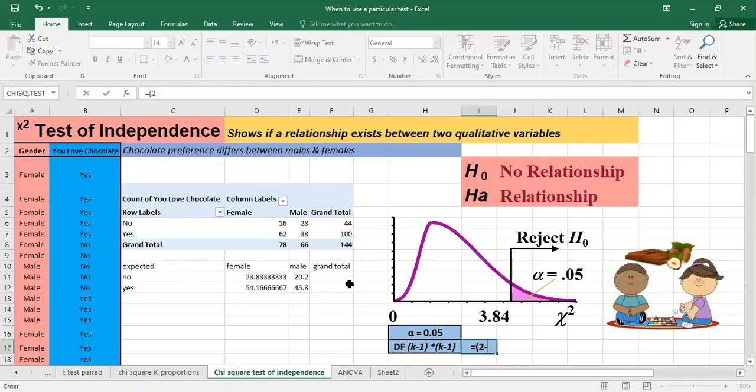So it's equal to 2 minus 1 times, also in the chocolate preference we're having two categories whether they love the chocolate or not, so it's also 2 minus 1. So it's 1 times 1. So the degrees of freedom is 1.